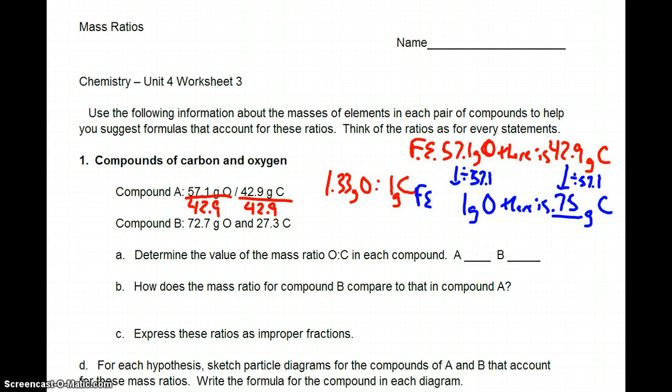So it's a 1 to 3 quarters, if you think about it in terms of fractions. This value here is 4 thirds O to 1 C, or we could say 1 O to 3 fourths C. So it's just the inverse of those. And then it says determine the value of the mass ratio of O to C in each compound. So if I'm comparing O to C, it's 1.33.